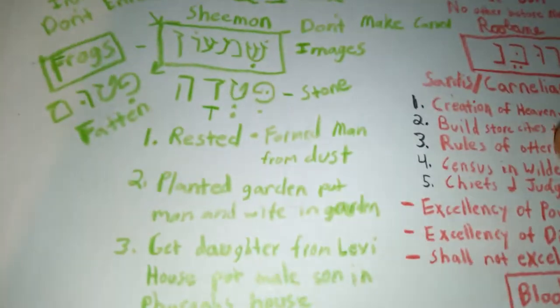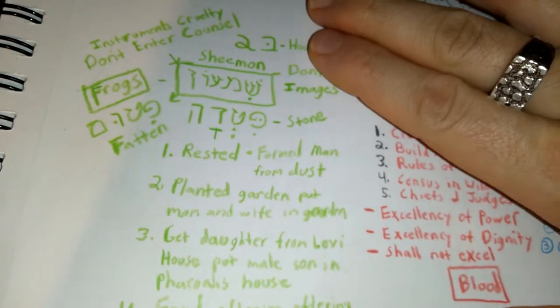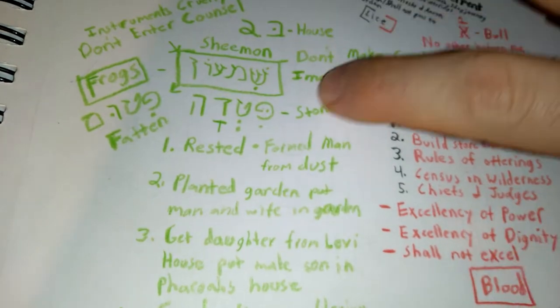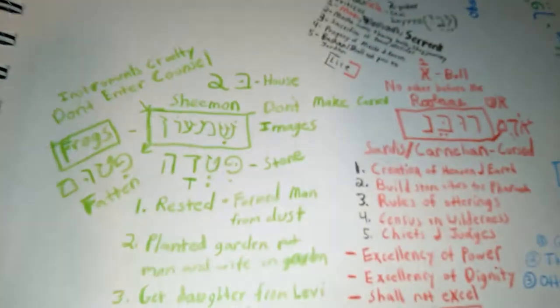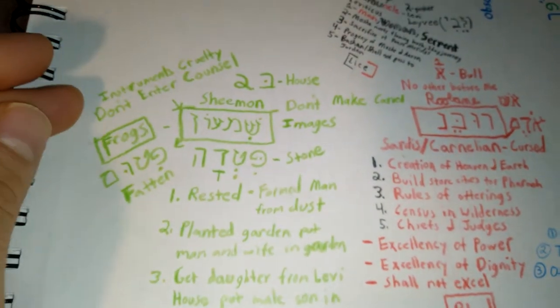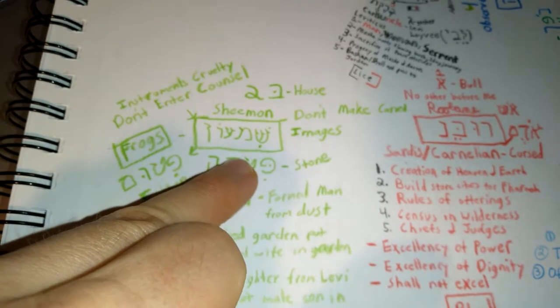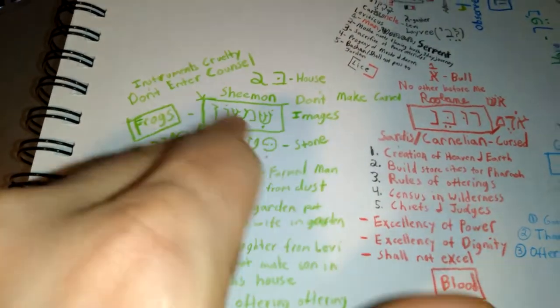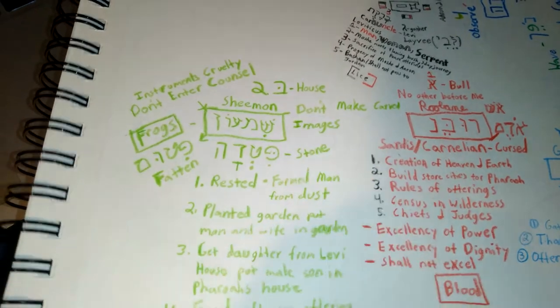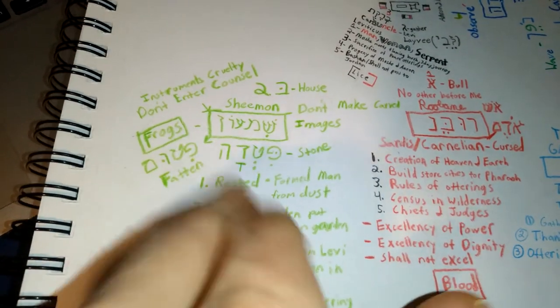Now, if you take a look here, Shimon, number two, like a house, is very specific on do not enter to the council of Shimon and there are instruments of cruelty that lie within. Don't make carved images.